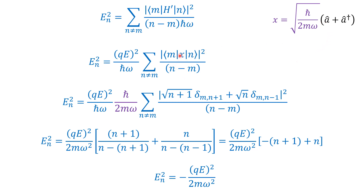Replacing X with (A + A†), we first consider the annihilation operator A. It reduces the ket level by 1. For the matrix element to be nonzero, we need m = n+1, so that A acting on |n+1⟩ gives |n⟩. The coefficient is √(n+1), and the Kronecker delta is δ_{m, n+1}, which equals 1 only when m = n+1.